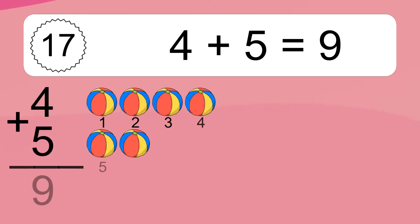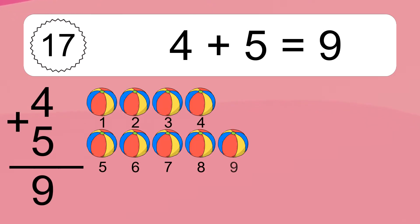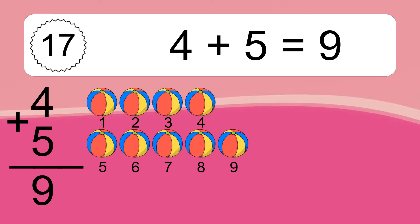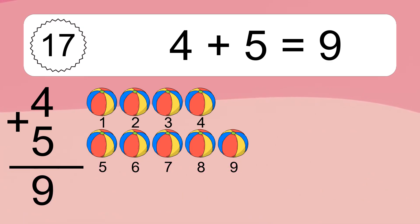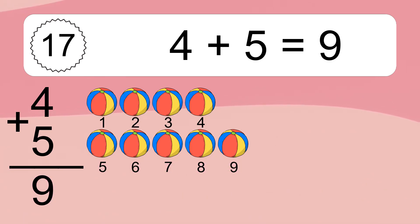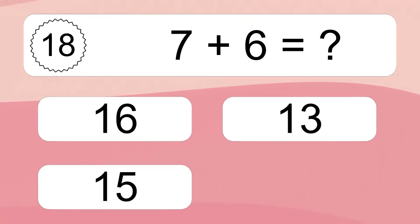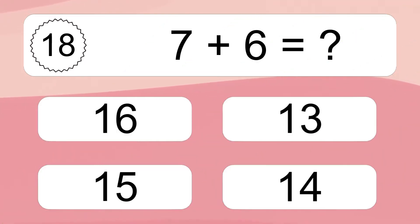4 plus 5 equals what? 4 plus 5 equals 9. Let's count it: 1, 2, 3, 4, 5, 6, 7, 8, 9. 7 plus 6 equals what?